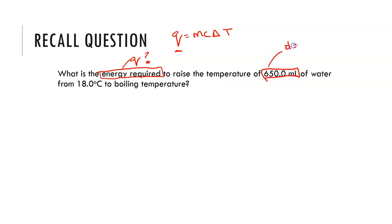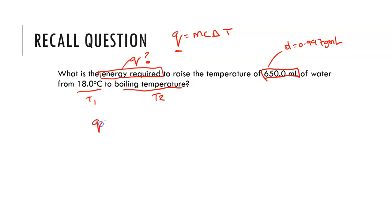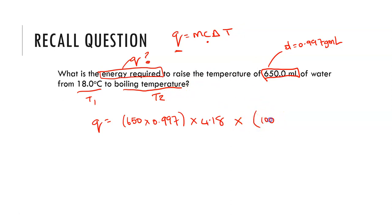To raise the temperature of 650 mils of water, we can use the density equal to 0.997 grams per mil to work out the mass of the water. From 18 degrees — so this is our initial temperature — to the boiling temperature. The boiling temperature of water is 100 degrees C, so that's our T2. Once we have all this, we can substitute it into our formula: 650 multiplied by 0.997, multiplied by the specific heat capacity of water — which is in our data booklet — 4.18 joules per degree C per gram. And then our delta T, which is going to be 100 minus 18.